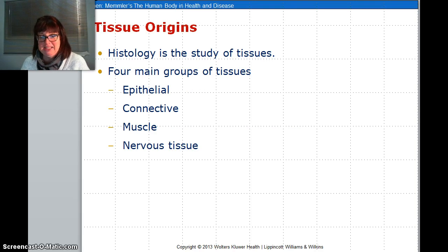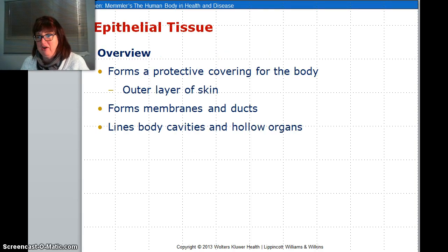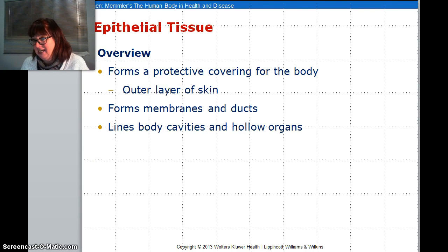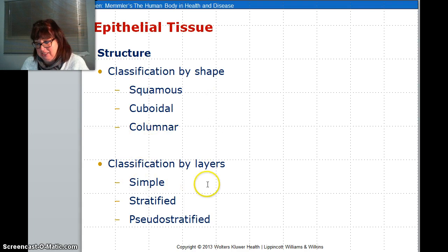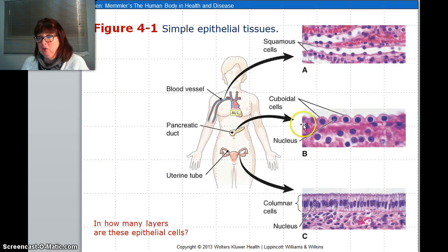First off you have epithelial tissue. Epithelial tissue is for a protective outer covering. It forms membranes and ducts. It lines body cavities and hollow organs — very important. There are three types: squamous, which is flat; cuboidal, which looks like cubes; and columnar, which looks like columns. And they can be simple, which means there's a single layer, or stratified, which means there are many layers.